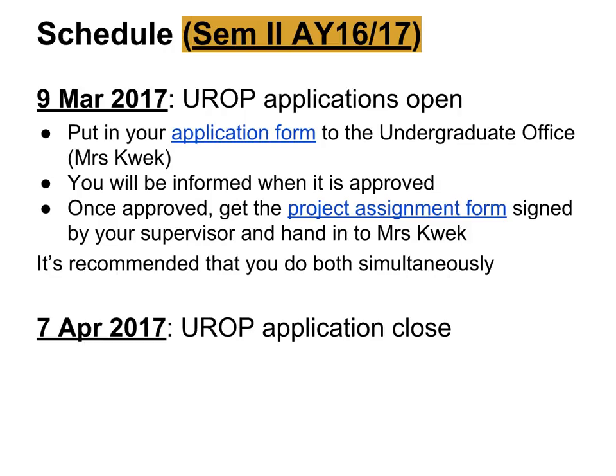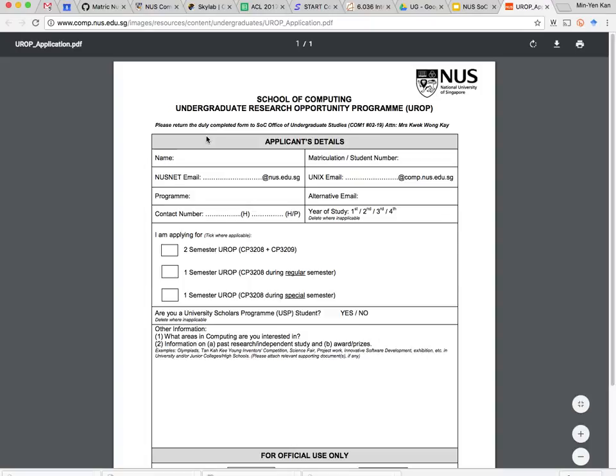Here's how it works. You can get an application form for UROP from me today if you're interested — do take one anyway even if you're not sure. It's a very simple form; it's just some paperwork for us to go through. We will check whether you satisfy the prerequisites: 60 MCs, 3.8 CAP, etc.